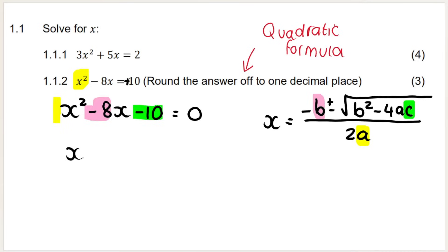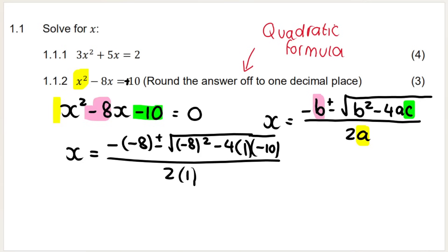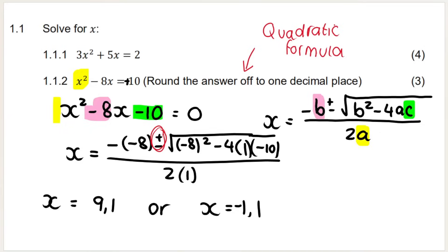To get your marks, show the substitution into the quadratic formula: negative negative 8, plus or minus the square root of negative 8 squared minus 4 times 1 times negative 10, all over 2 times 1. If you type that into your calculator using the plus sign you get one solution: 9.1. Change it to a minus and you get the other solution: negative 1.1. Remember, they want it to one decimal place, so round accordingly.